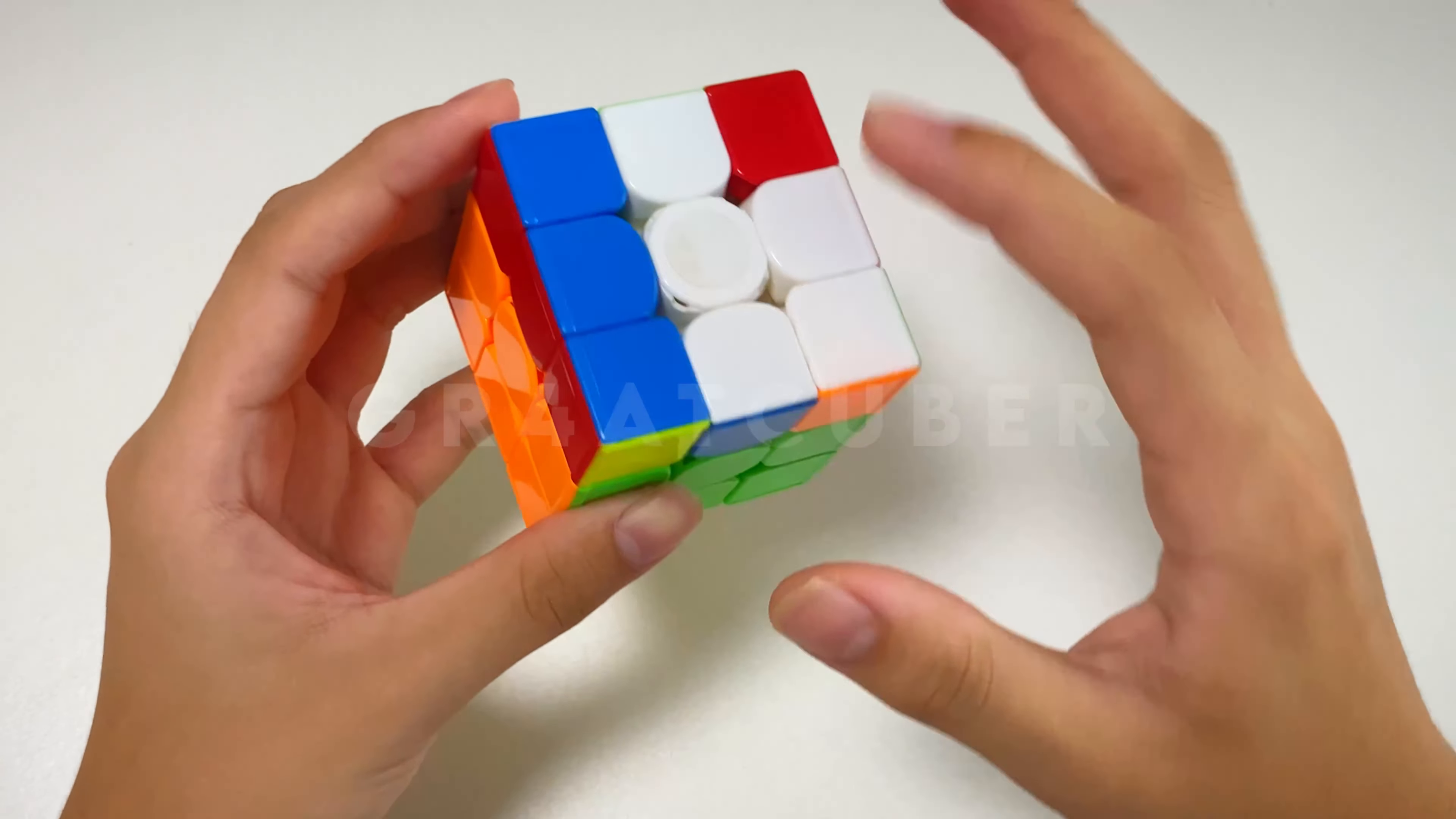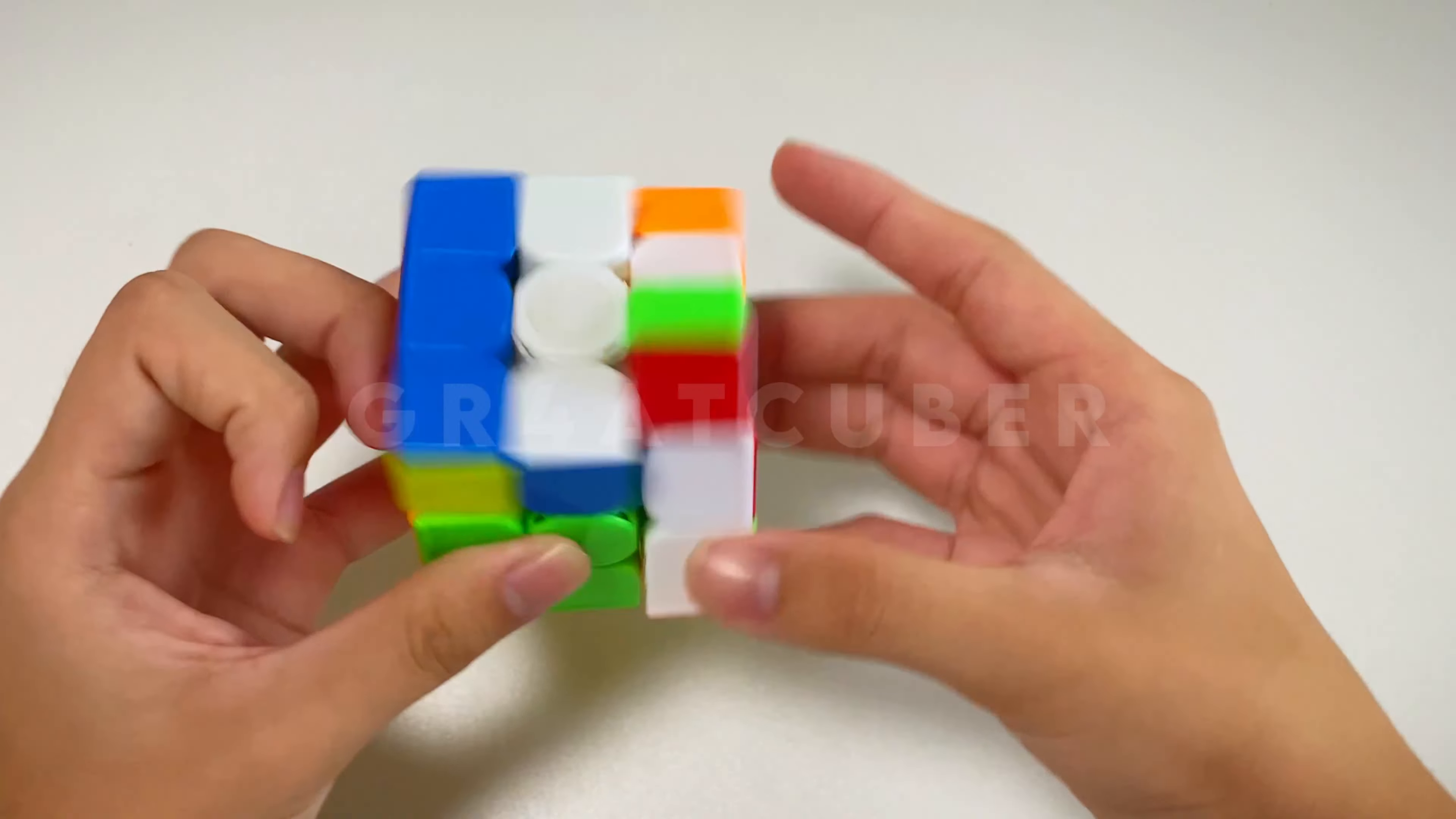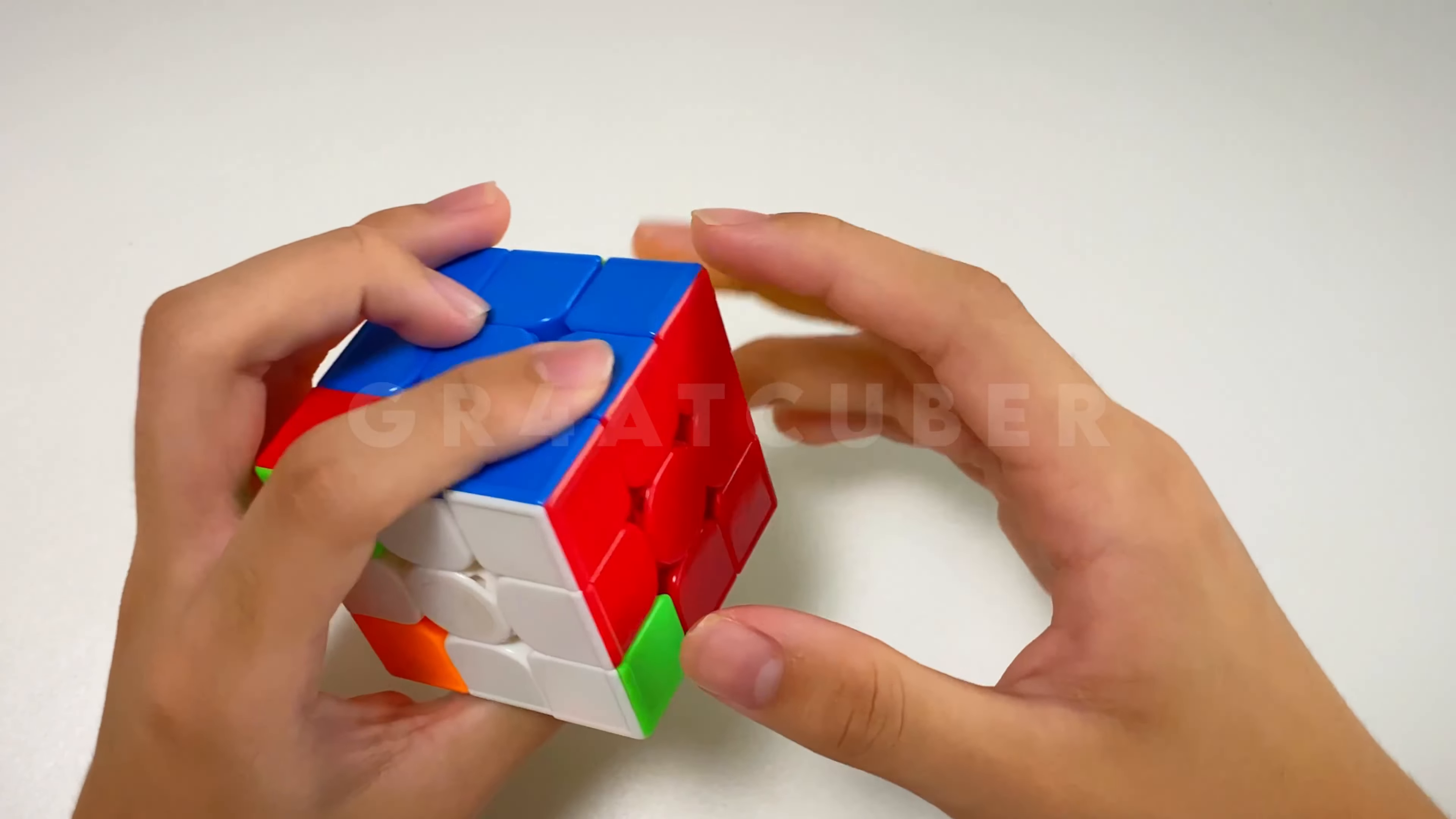Then after I did that, I noticed that I got this three-pair plus an extra piece. I don't know why, but I decided to insert it in like that instead of doing this. So I just did an R prime, then U2, and insert it into the back just by doing this.